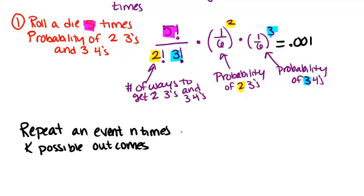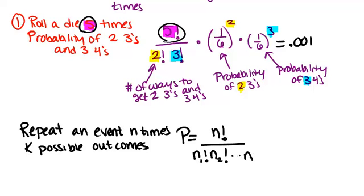The formula for the overall probability will be n factorial, which you can remember here we had five and five factorial. And then you divide by any repetitions in the specific event that you were looking for, the specific outcome that you're looking for. So we'll just call that n1 factorial, n2 factorial, all the way to possibly nk factorial.